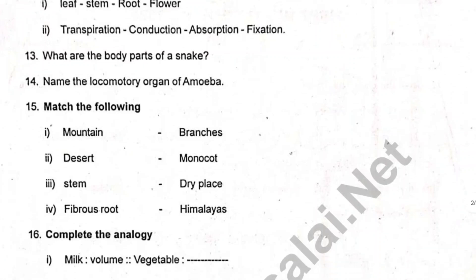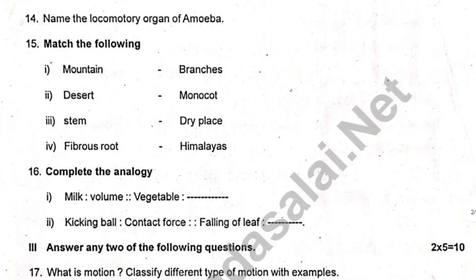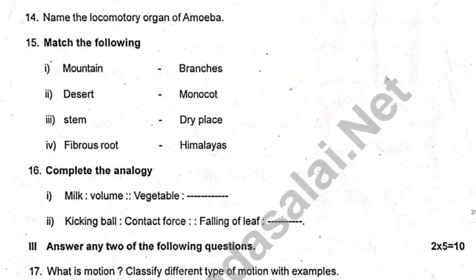What are the body parts of the snake? Name the locomotory organ of Amiibo. 4th section — 15 marks — match it. It was another complete analogy. Use the math. You can read it for 12 marks; you have to read it in 3.